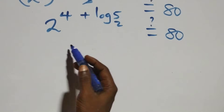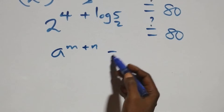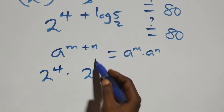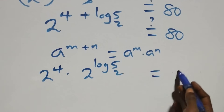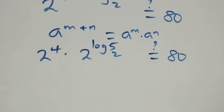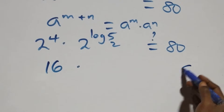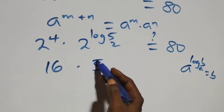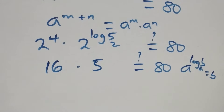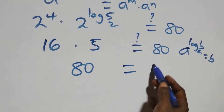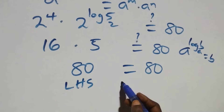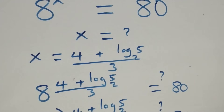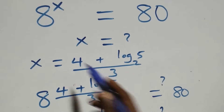This follows from the law of indices: a raised to power (n plus n) equals a raised to power n times a raised to power n. So we get 2 raised to power 4, times 2 raised to power log₂5. Now 2 raised to power 4 is 16, and by the identity a raised to log base a of b equals b, 2 raised to log₂5 equals 5. So 16 times 5 equals 80, confirming the left-hand side equals the right-hand side. Therefore x equals (4 plus log₂5) over 3 is the solution.